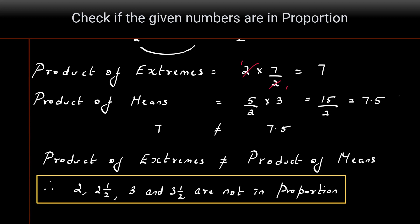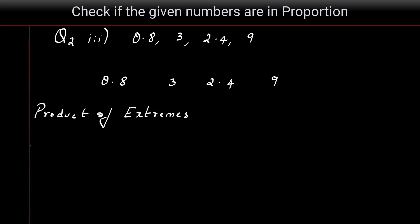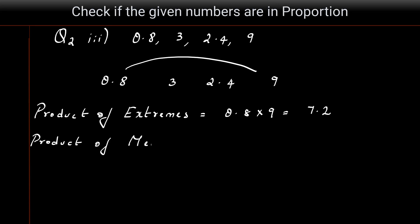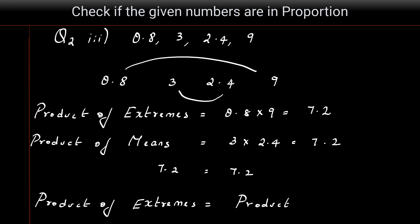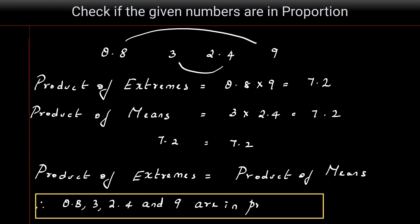Question three: check if 0.8, 3, 2.4, and 9 are in proportion. This is a combination of whole numbers and decimals, but the concept remains the same. Product of extremes: 0.8 × 9 = 7.2. Product of means: 3 × 2.4 = 7.2. Since product of extremes equals product of means, the numbers 0.8, 3, 2.4, and 9 are in proportion.